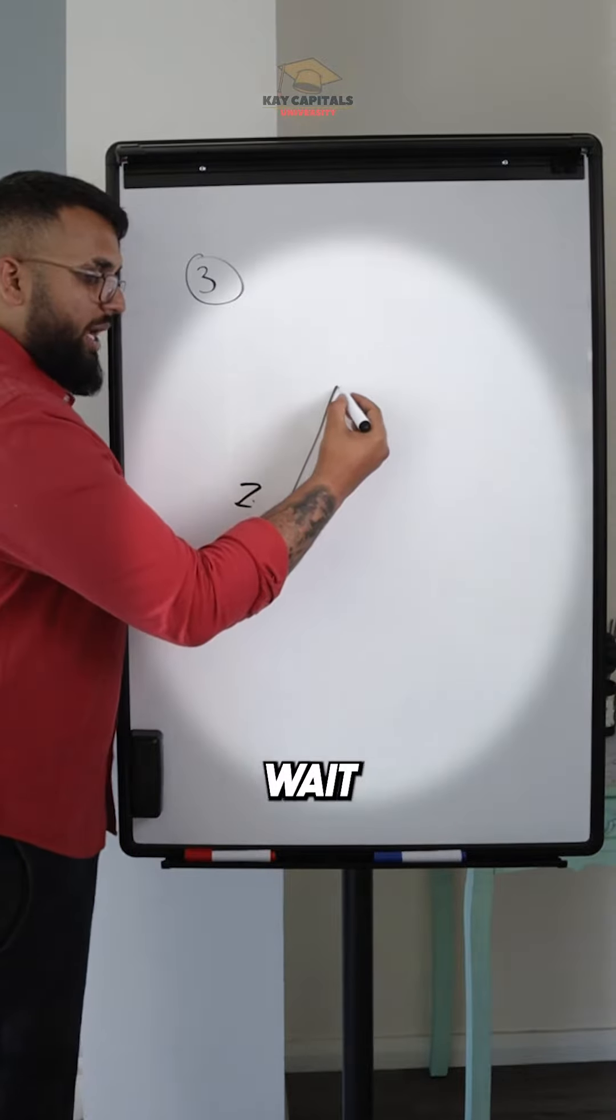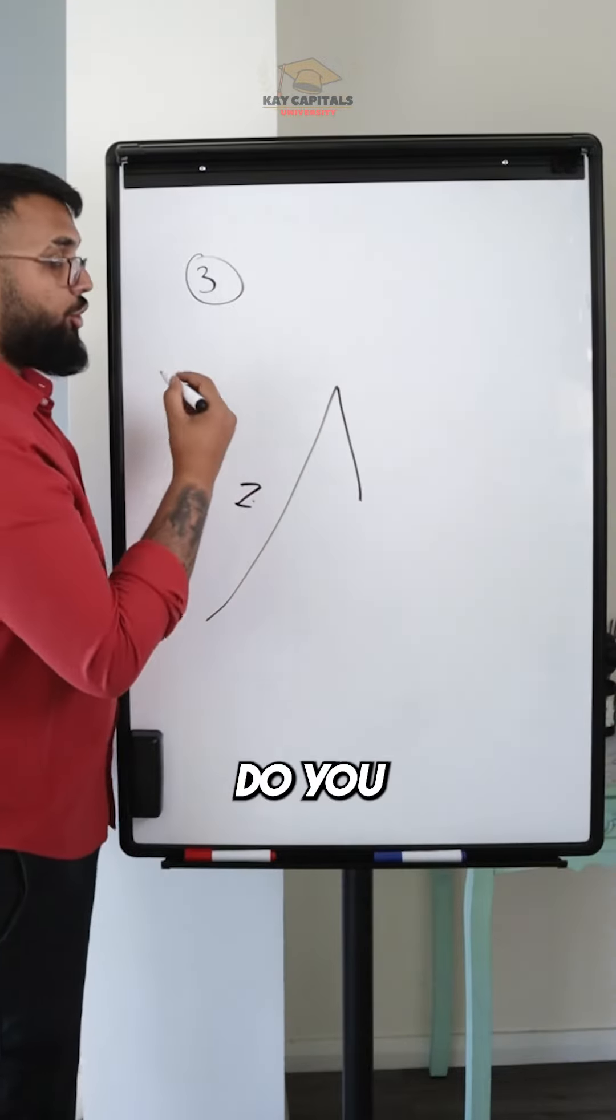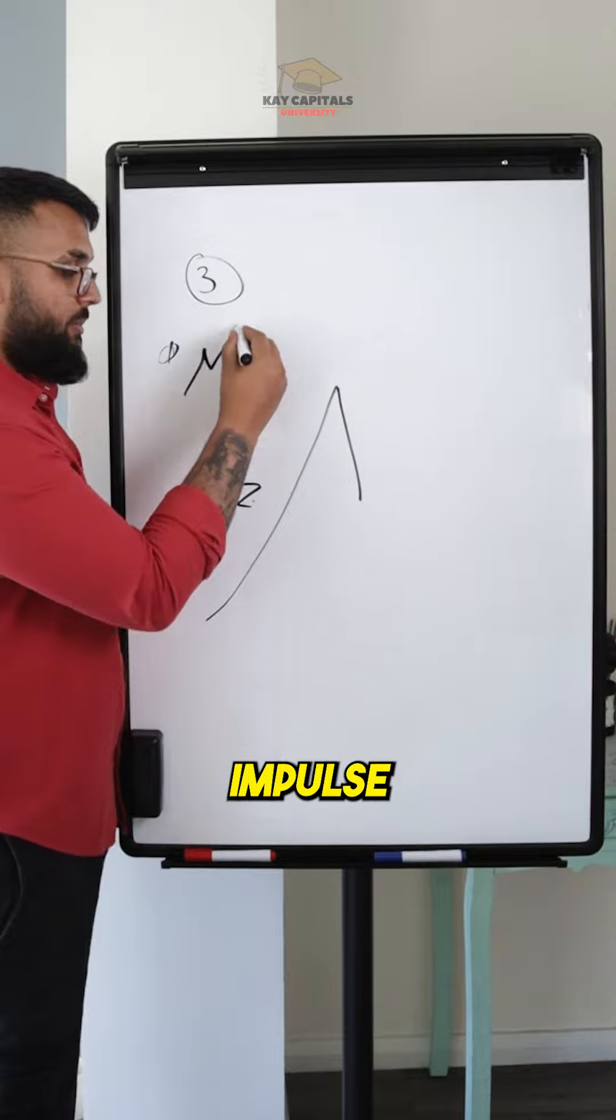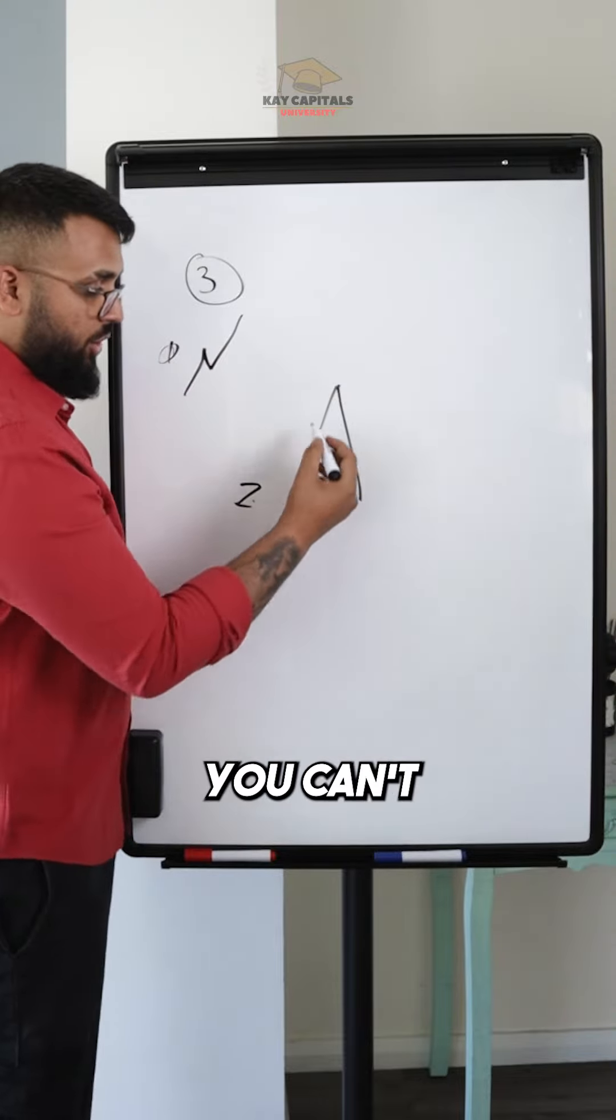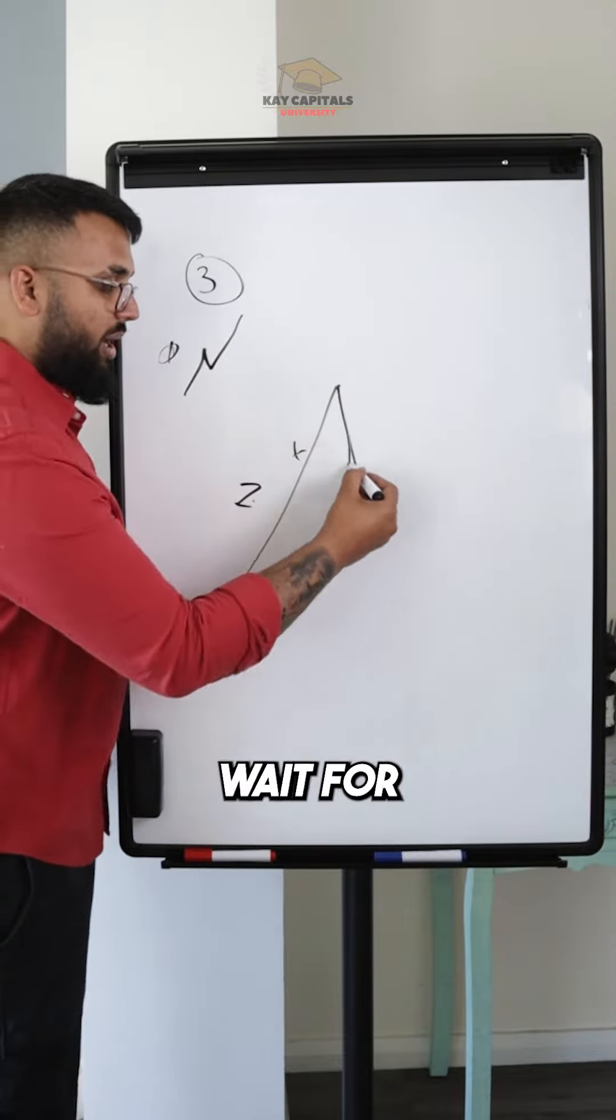You have to wait for a pullback. Why? Because you remember the first structure that we had: impulse, pullback, impulse. And it's not full yet. You can't trade just impulse. You have to wait for a pullback.